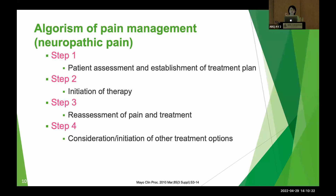Once you choose a medication, you may use a titration technique. You need to select the best medication and start therapy. Step three is reassessment of pain and treatment — assessing whether the treatment is appropriate and whether the patient experiences any side effects. Step four is consideration or initiation of other treatment options, combining pharmacotherapy and non-pharmacotherapy options.